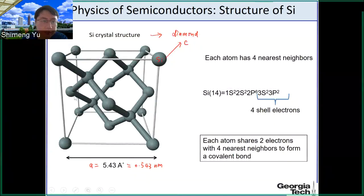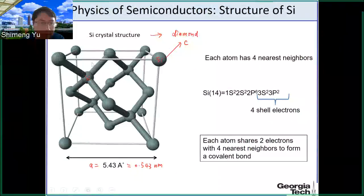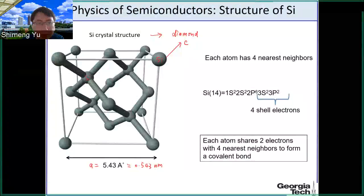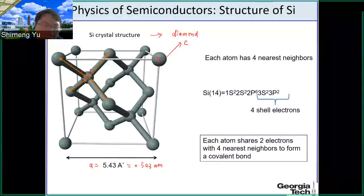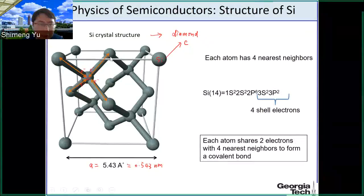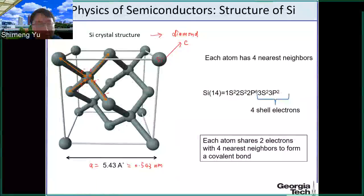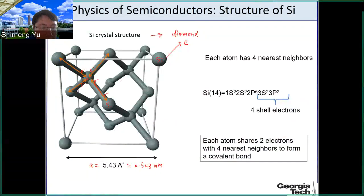If you look at each silicon atom, it will have four neighboring atoms. Each silicon, as introduced earlier, has four shell electrons. It will therefore form four covalent bonds with its nearest neighbors, because each silicon can share one electron with its neighbor, and those two electrons form the bond.